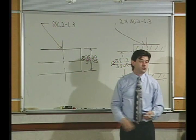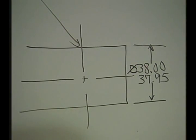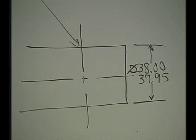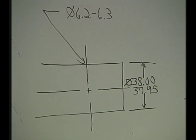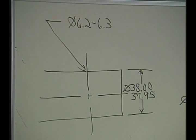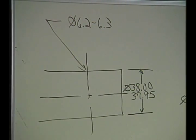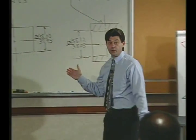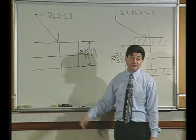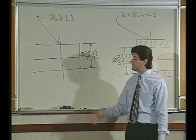On this part, from those features which one do you think would fit the criteria for selection of datum features the best? The big diameter. Why specifically? What is it? Why is it better than the small diameter or the end of the part? It's a mating feature. Okay, well the small hole is a mating feature too. Larger surface area. Okay, it does have a larger surface area.